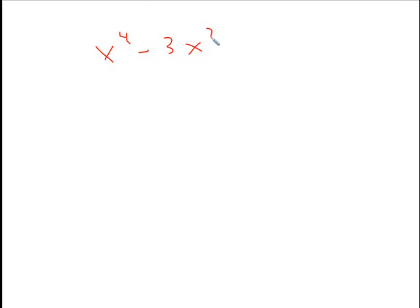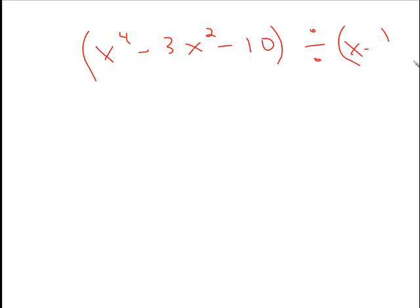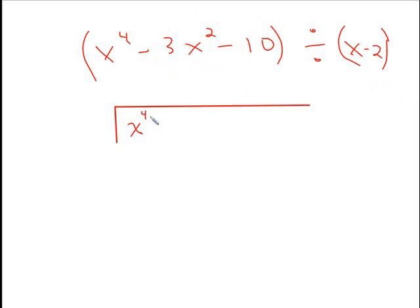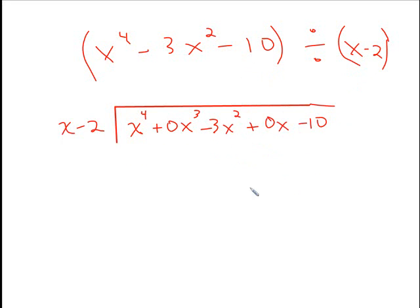Let's try another one: x to the 4th minus 3x squared minus 10, divided by x minus 2. Notice we're missing some terms — we're missing an x cubed term and an x term. When you set this up, you've got to fill in the missing terms. So we write: x to the 4th plus 0x cubed minus 3x squared plus 0x minus 10. Always make sure you fill in the missing terms. Then we have x minus 2 outside, so let's start the process.